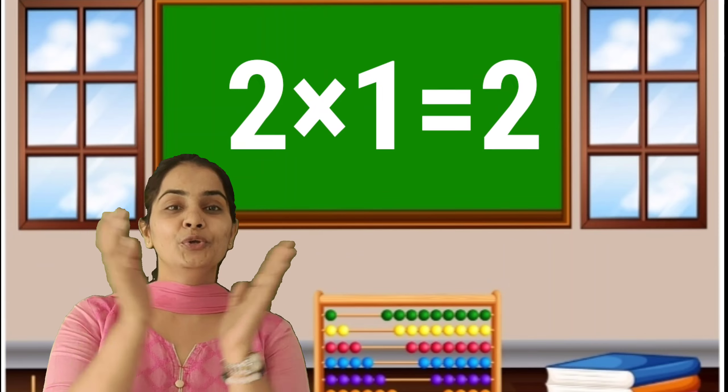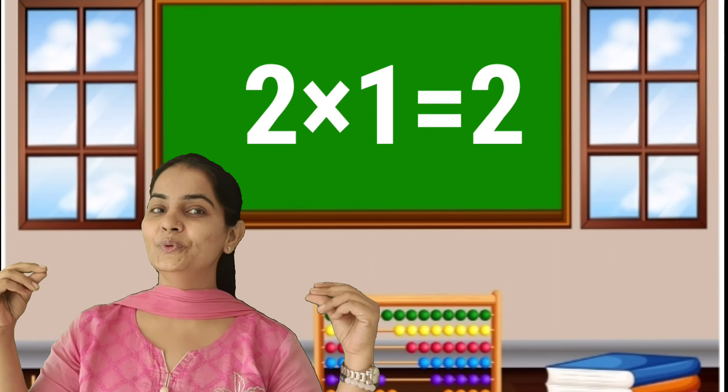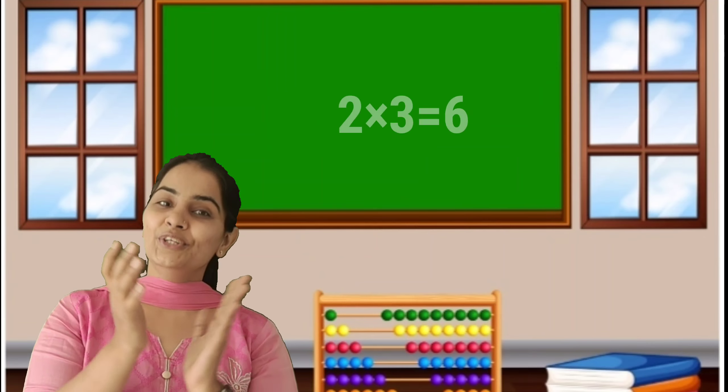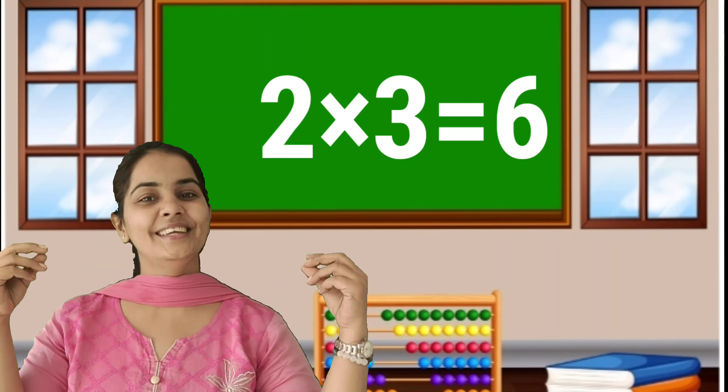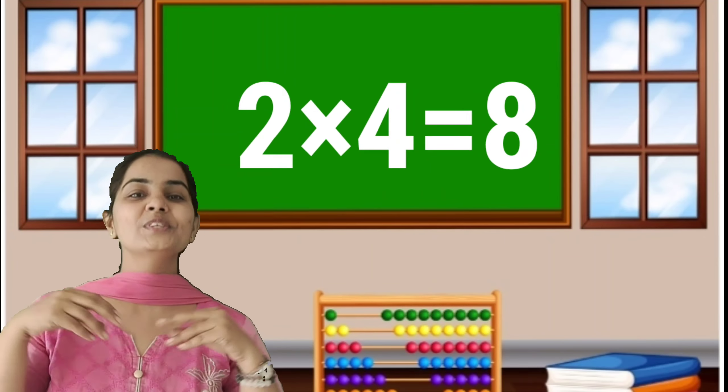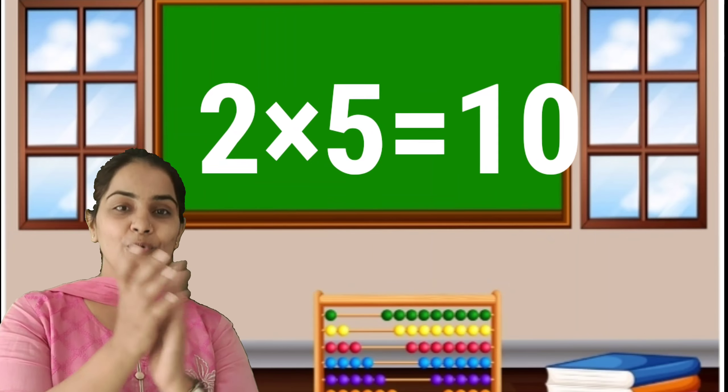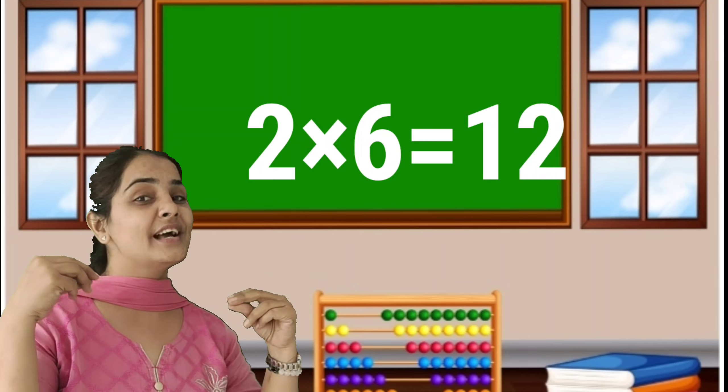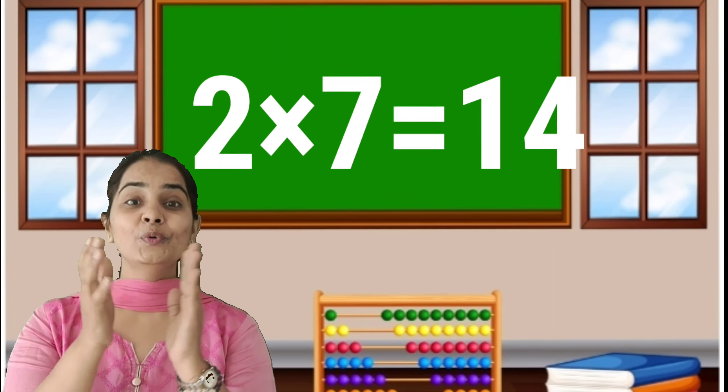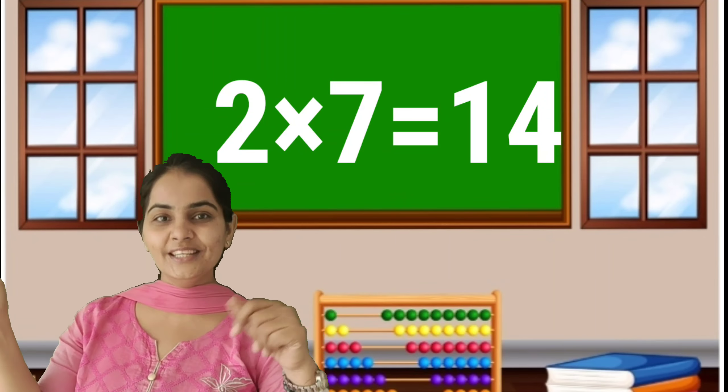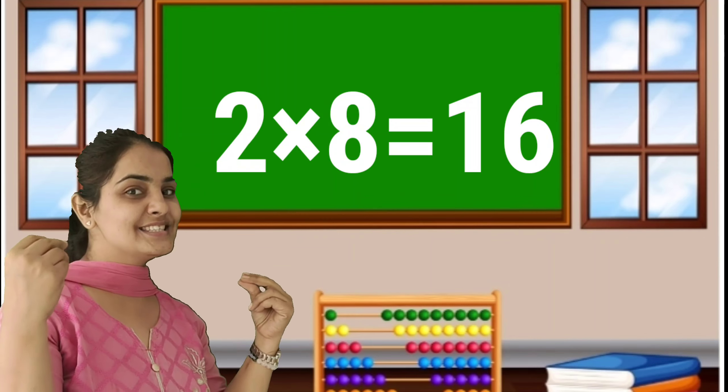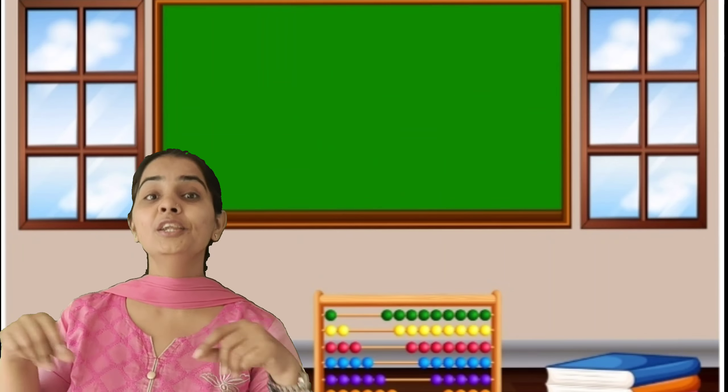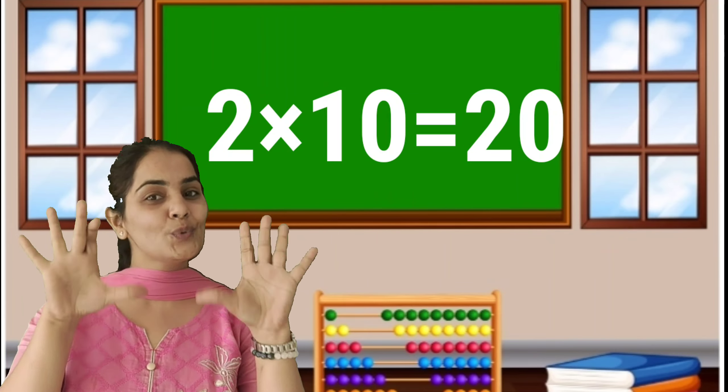Let's try. 2-1's are 2, 2-2's are 4, 2-3's are 6, 2-4's are 8, 2-5's are 10, 2-6's are 12, 2-7's are 14, 2-8's are 16, 2-9's are 18, 2-10's are 20.